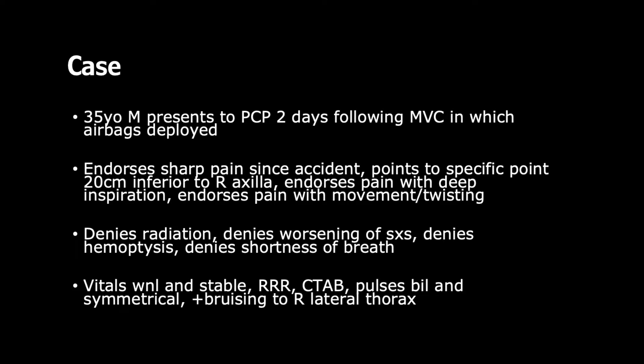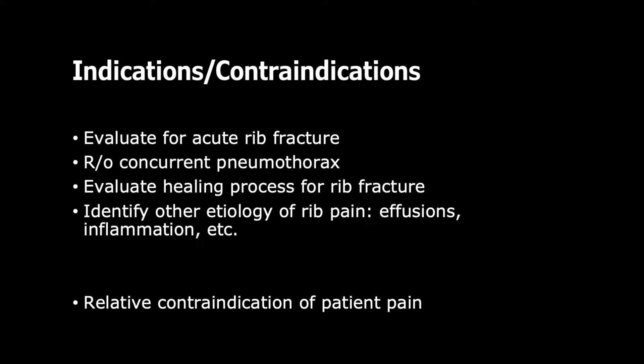His vitals are all normal and stable. Regular rate and rhythm, clear auscultation bilaterally. Pulses are bilateral and symmetrical. He does have bruising to the right lateral thorax. Right off the bat, we're thinking this guy very likely has a rib fracture. How do we test for that in the office right there? We can use ultrasound.